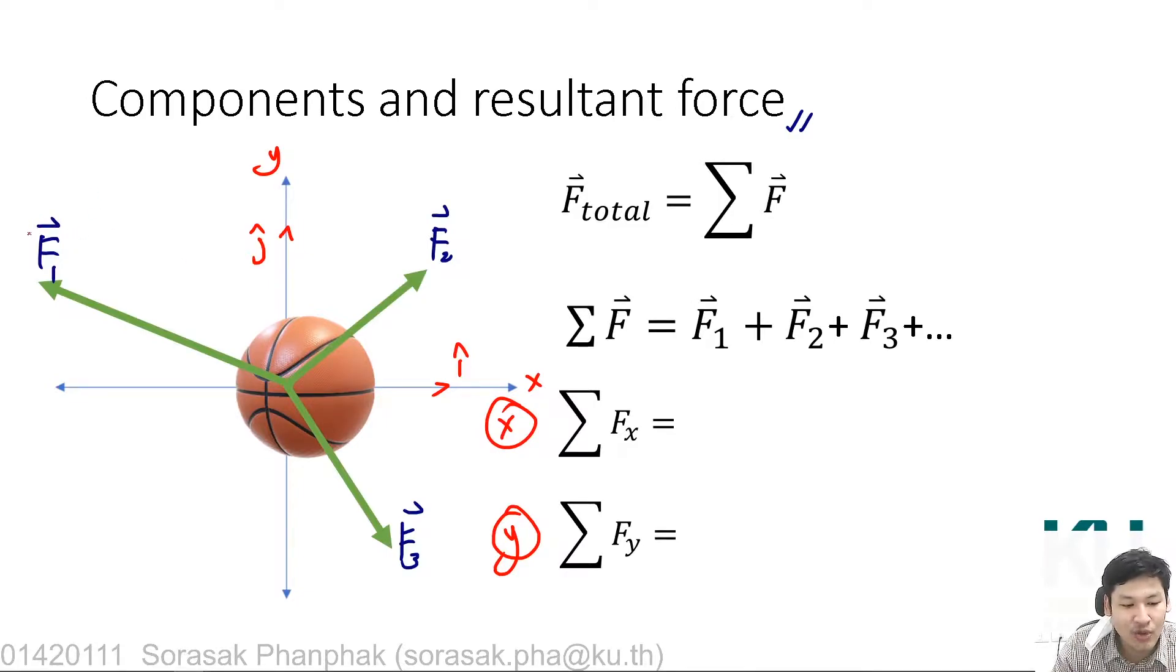This is an example. If I have the magnitude of F1 equal to 10 Newton, F2 equal to 5 Newton, and F3 with magnitude of 3 Newton. And if this angle is 30 degrees, this is 60 degrees, and this is 45 degrees, how can you find the resultant force of these forces pulling on the basketball object?